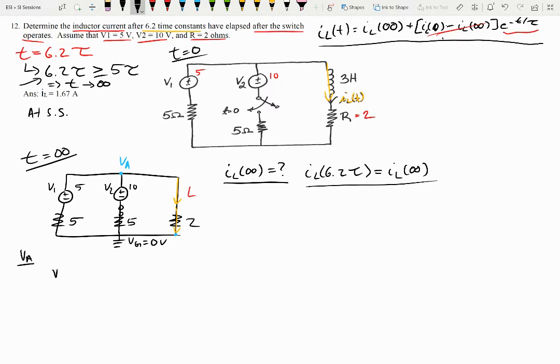So this is for V of A. So V of A minus 10 over 5 plus V of A minus 5 over 5 plus V of A minus 0 over 2. And this will be equal to 0.